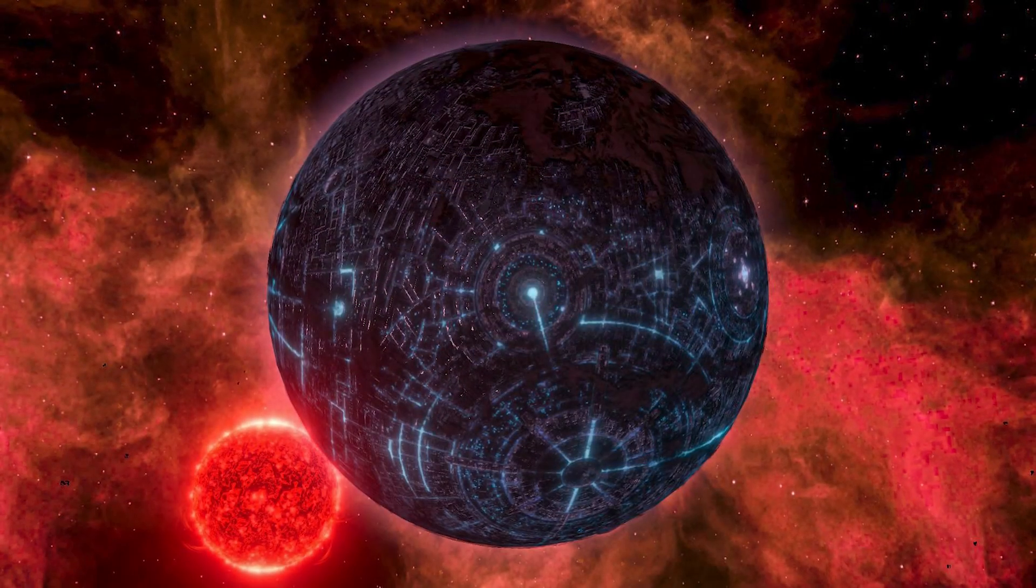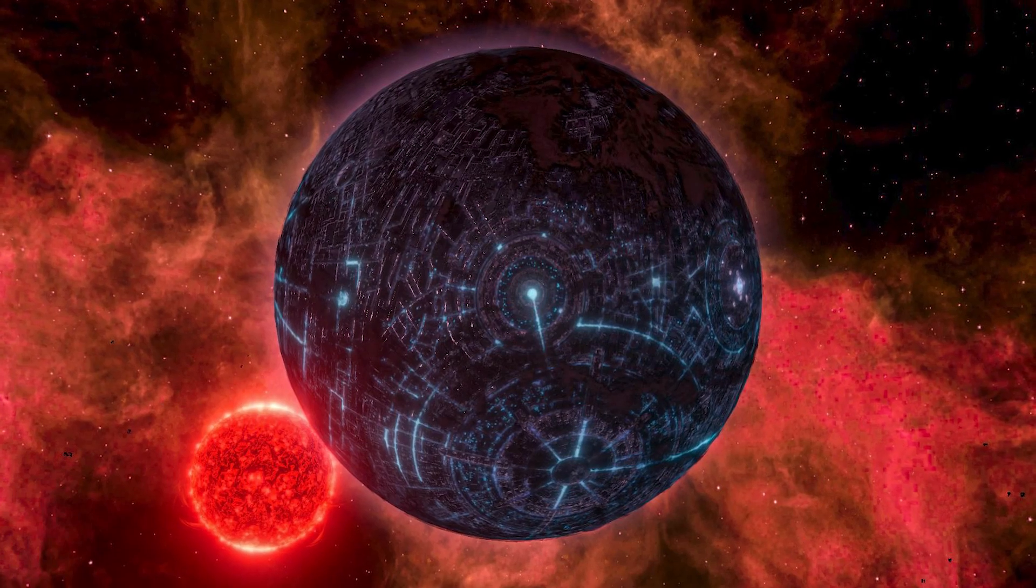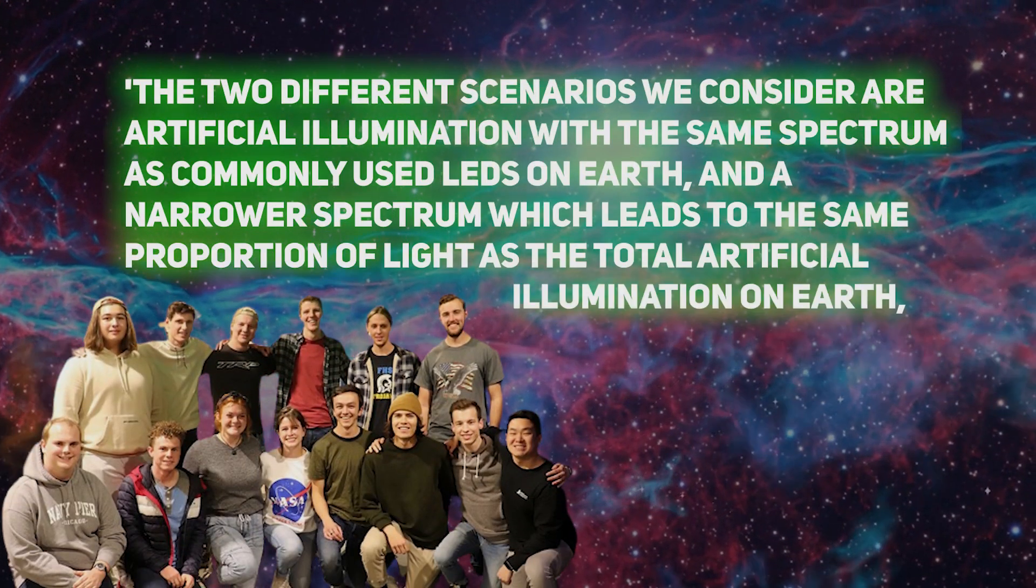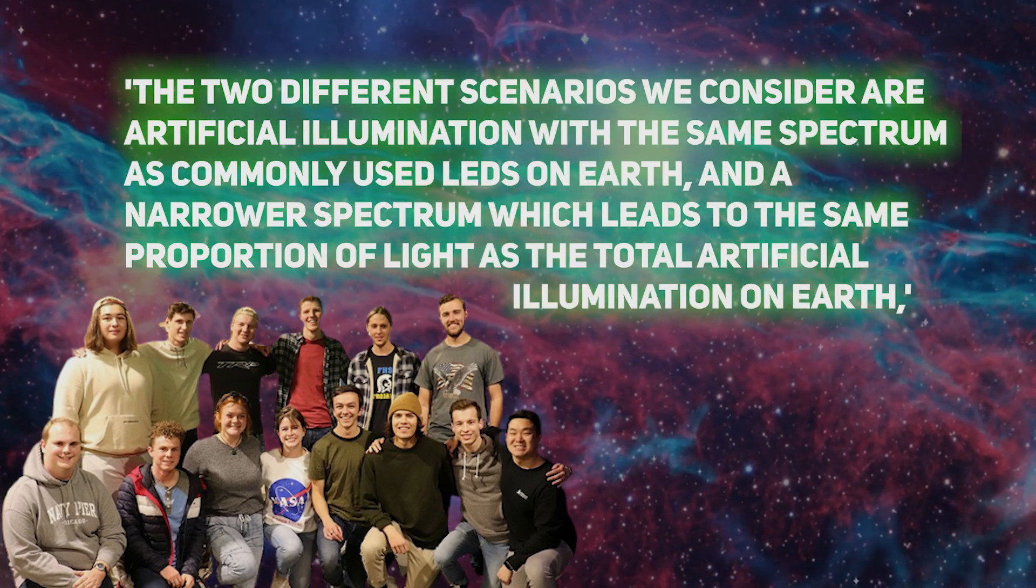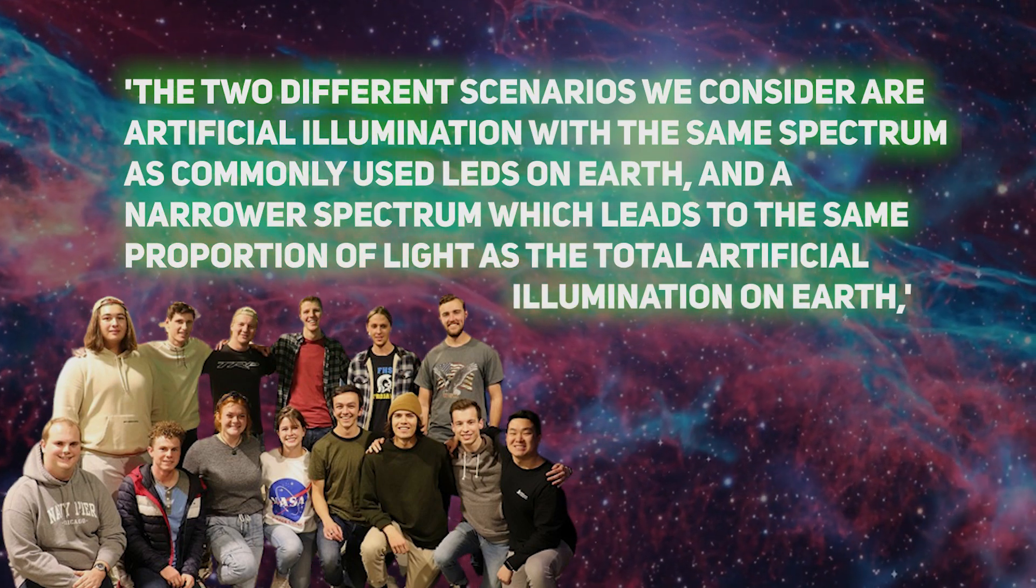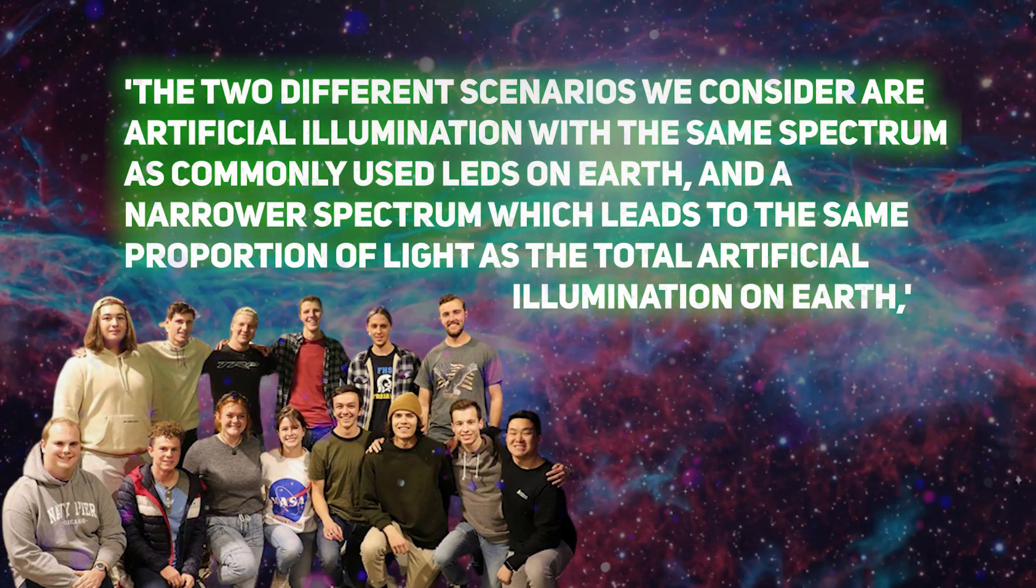The team investigated whether artificial lights could be detected on the dark side of Proxima b by computing light curves from the planet and its host star. The two different scenarios they consider are artificial illumination with the same spectrum as commonly used LEDs on Earth, and a narrower spectrum which leads to the same proportion of light as the total artificial illumination on Earth.